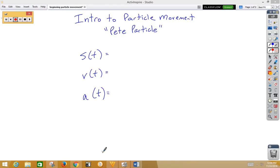This is particle movement along a line, also known as rectilinear motion. So let's imagine that we have a straight line and we have a particle on that line. Now my particle is Pete.